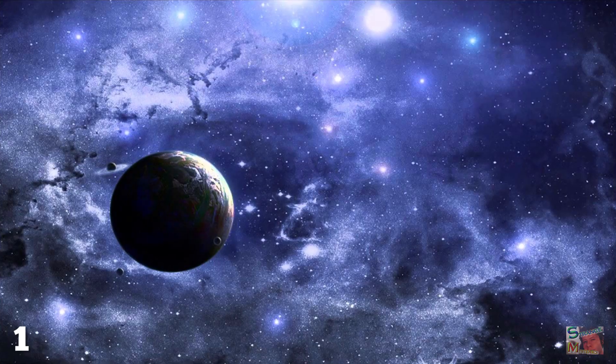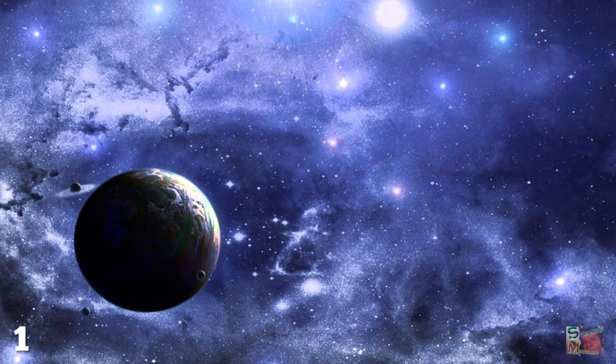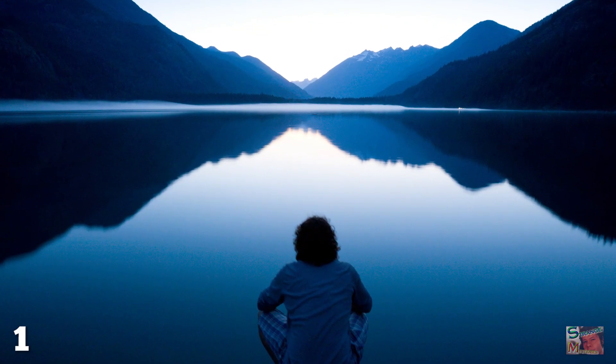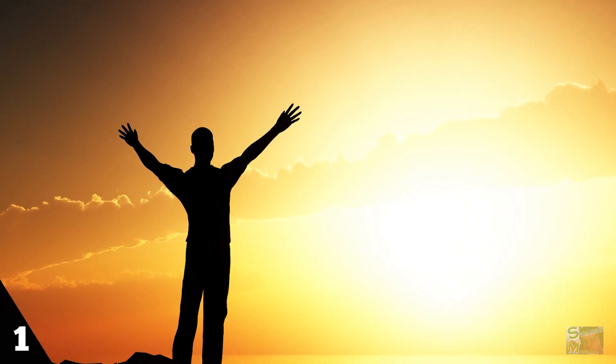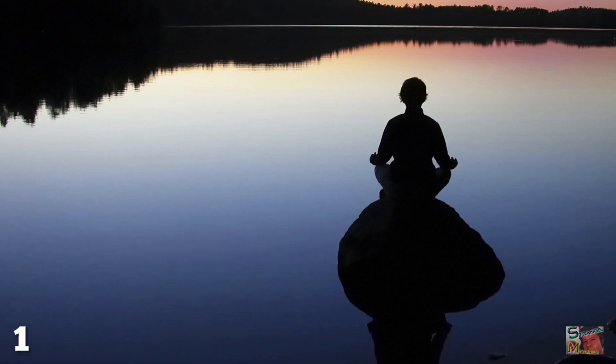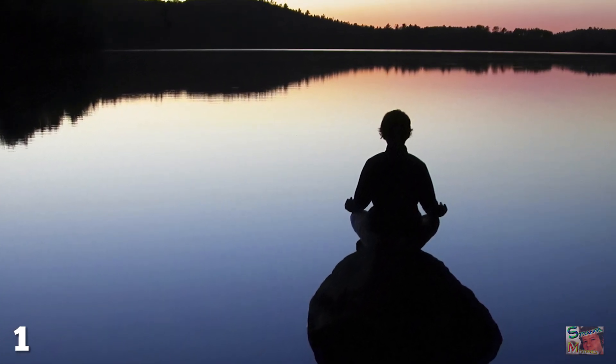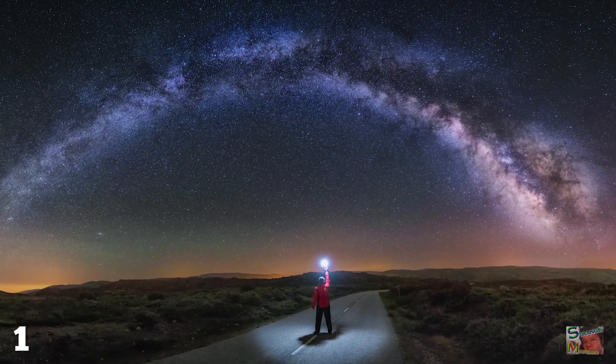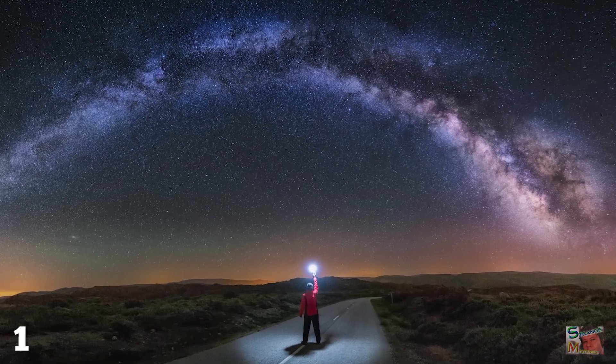For proof, he points to the fact that there are literally hundreds of variables within our universe which, if altered by a fraction, would have prevented life and consciousness from ever existing. But rather than accepting our existence as being mere chance, and that only lucky life forms like us would be here to question reality in the first place, Lanza instead takes this Goldilocks universe of ours as evidence that the universe was created by us for us.